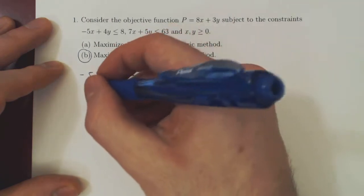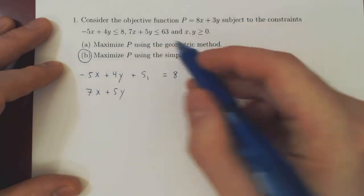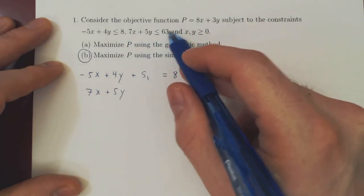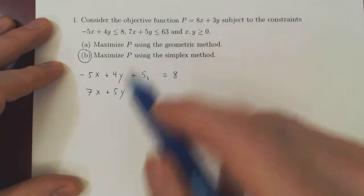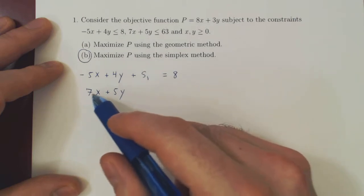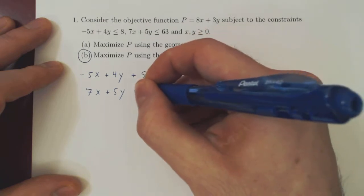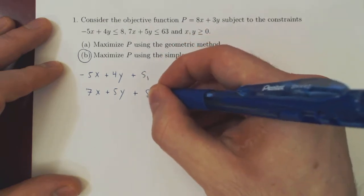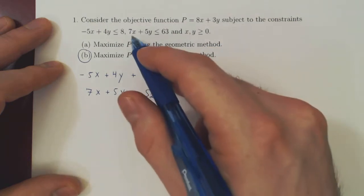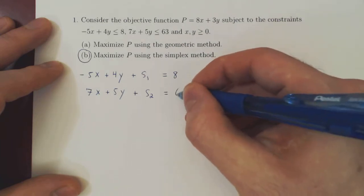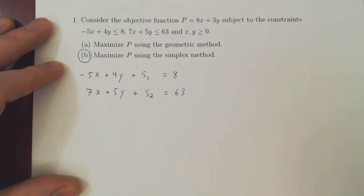Same for the second inequality. We have 7x plus 5y and this is at most 63. If we add to the left-hand side just the right amount, we'll make this equal to 63. Of course, the amount that we have to add in this case may be different than the amount we have to add in the first case. So we need here another variable, call it S2. Now we give these two variables special names. We call them slack variables.